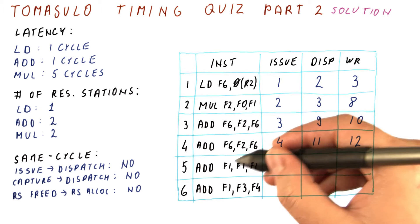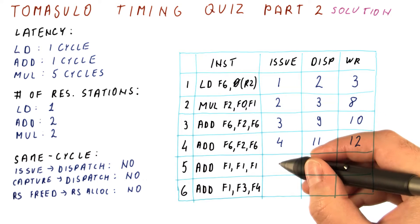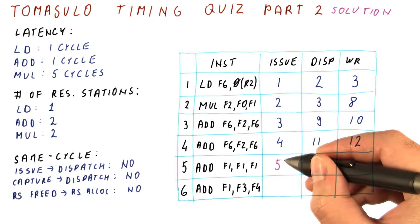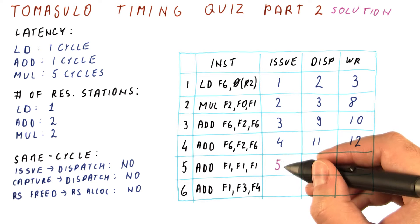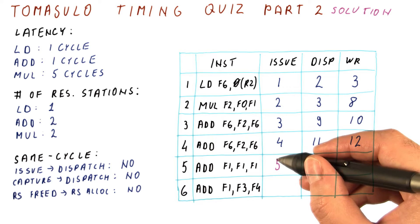We first have to figure out when the ADD here will issue. Normally, it would issue in cycle five, assuming that a reservation station is available. Let's check whether a reservation station is available in cycle five.